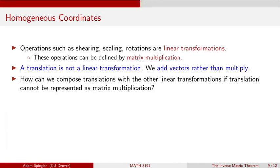Okay, so let's just recap where we are with the different transformations we've looked at so far. Operations such as shearing, scaling, rotations, these are linear transformations. And these operations we can represent with matrix multiplication. Translations are not linear transformations. And so those we can represent by adding vectors together rather than multiplying a matrix and a vector.